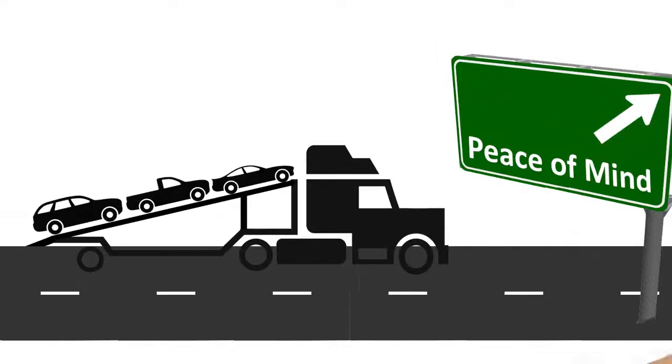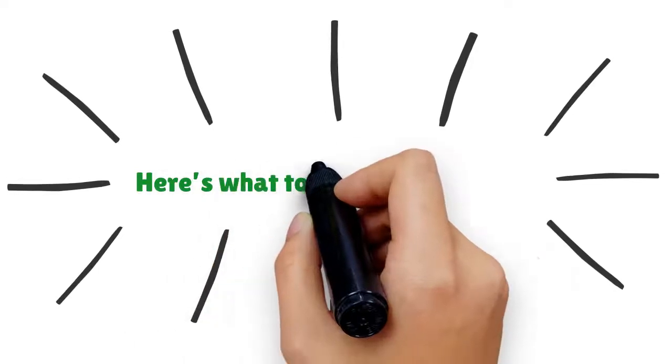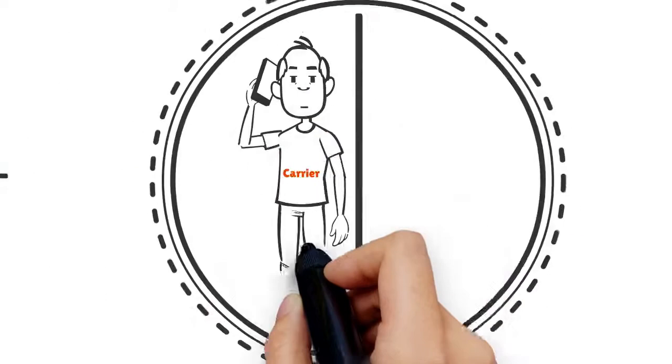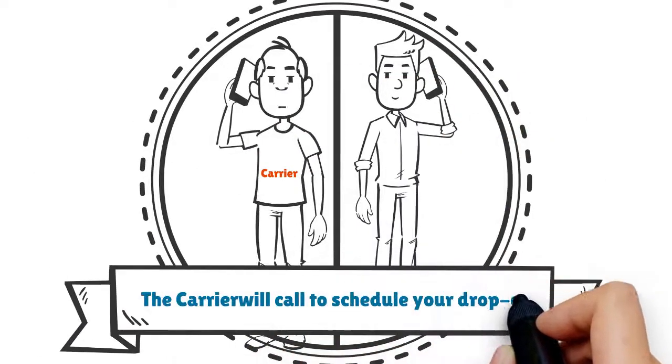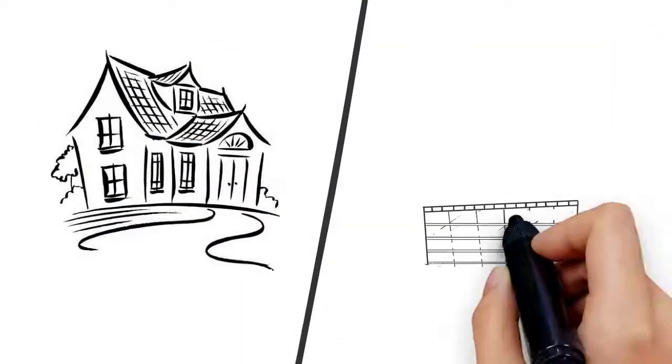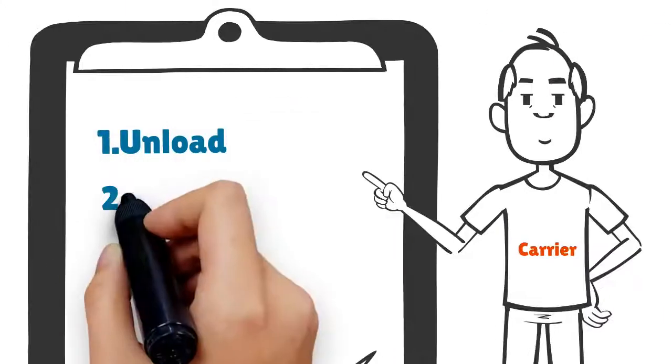Now that your vehicle's in transit, here's what to expect at drop-off. The carrier will call to schedule your delivery, whether at your residence or in a commercial area. You and the carrier will complete the following four steps.